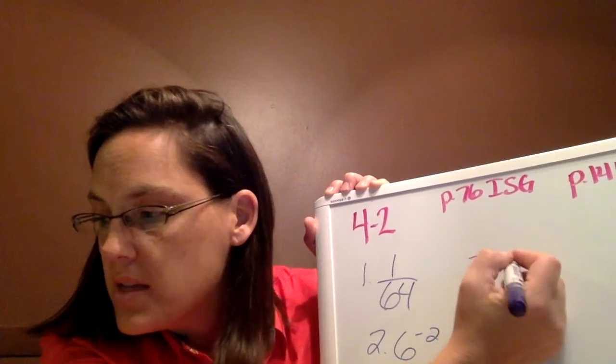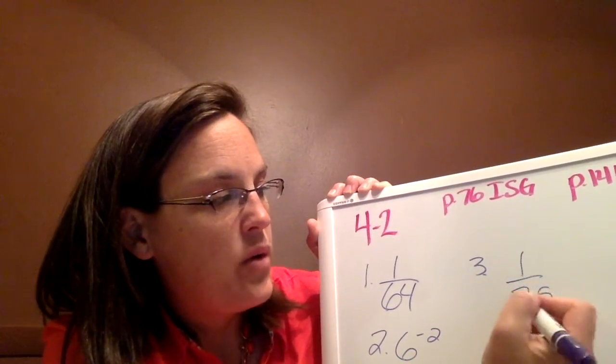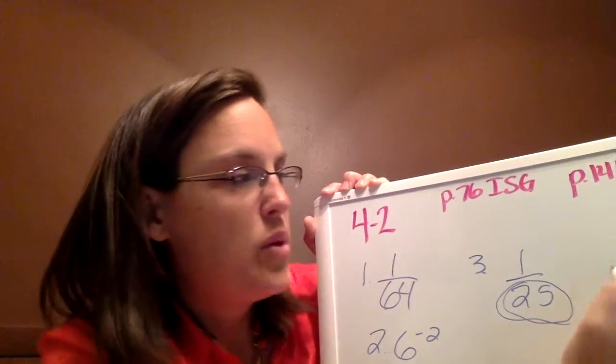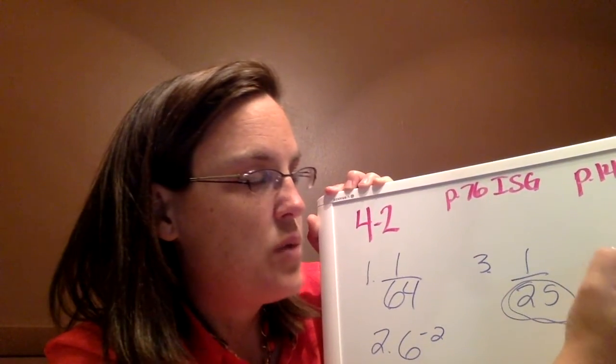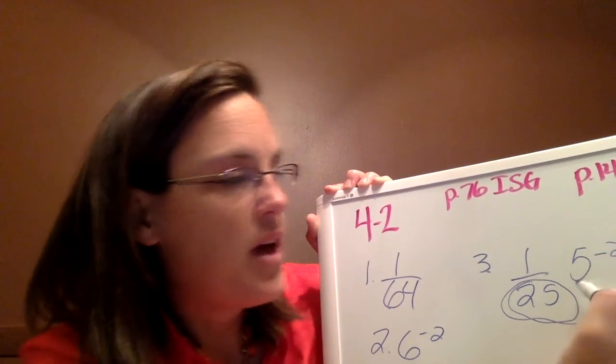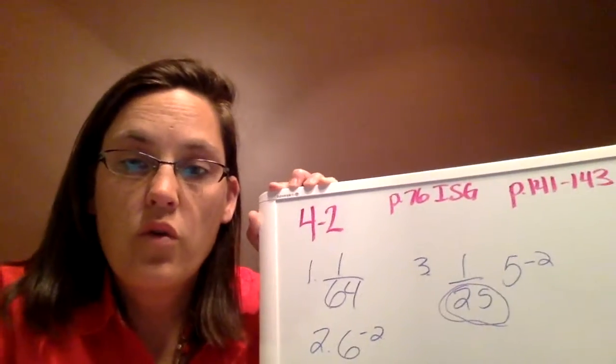For number 3, it's 1 over 25. Now in order for that 25 to be in the denominator, then we would have had to have a negative exponent. And we know that 5 squared is 25. So 5 to the negative 2 is 1 over 25.